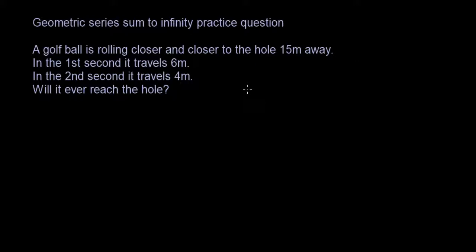Okay, so a golf ball is rolling closer and closer to the hole 15 meters away. So the first second it travels 6 meters. So that's sort of another way of saying we have a geometric sequence. The first term is 6. In the second second it travels 4 meters.